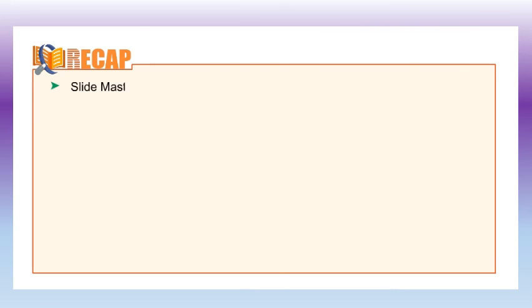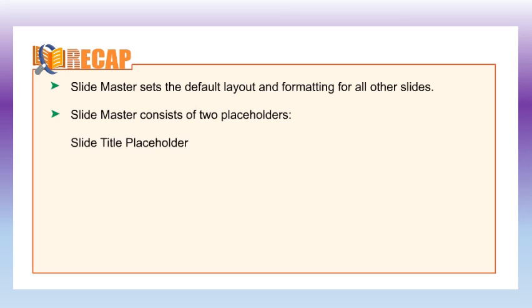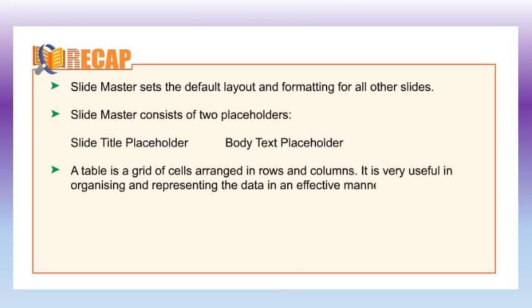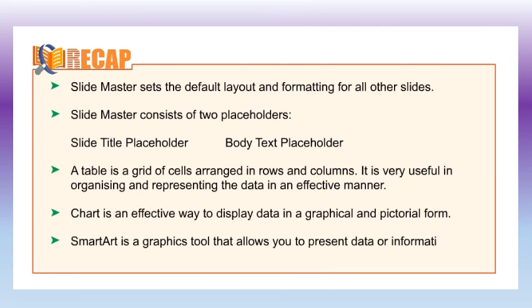Let's go through the recap of this chapter. Slide master sets the default layout and formatting for all other slides. Slide master consists of two placeholders: slide title placeholder and body text placeholder. A table is a grid of cells arranged in rows and columns, very useful in organizing and representing data effectively. A chart is an effective way to display data in a graphical and pictorial form. SmartArt is a graphics tool that allows you to present data or information with graphics instead of just using text.